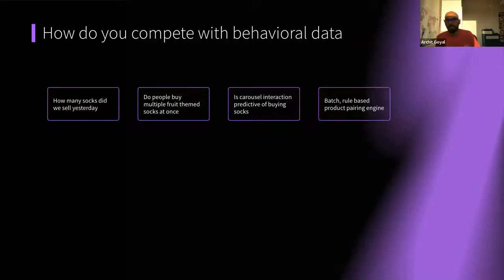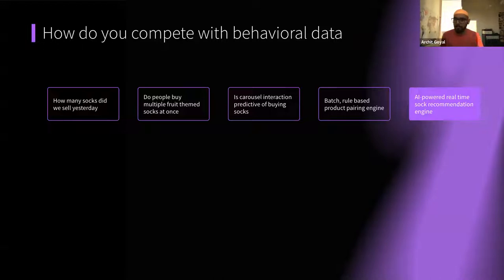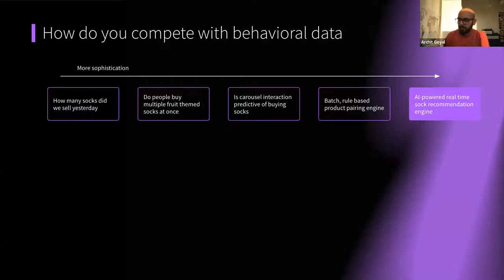That might set you up for quite a simple batch-based, rule-based product pairing engine. We know that socks with a similar theme are often bought together, so every week we can group together socks with a similar theme, give them a high similarity score, and pair them together at checkout or on a PDP. What that could eventually lead to is moving on to a predictive, AI-powered, more real-time, in-session recommendation engine. This company would have started with a really simple question — deeply understanding user behavior on their digital properties — then evolving the sophistication over time and doing more and more high-value things with that behavior.